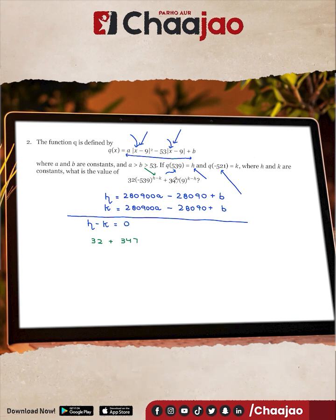32 plus 347 should be your final answer as 379.